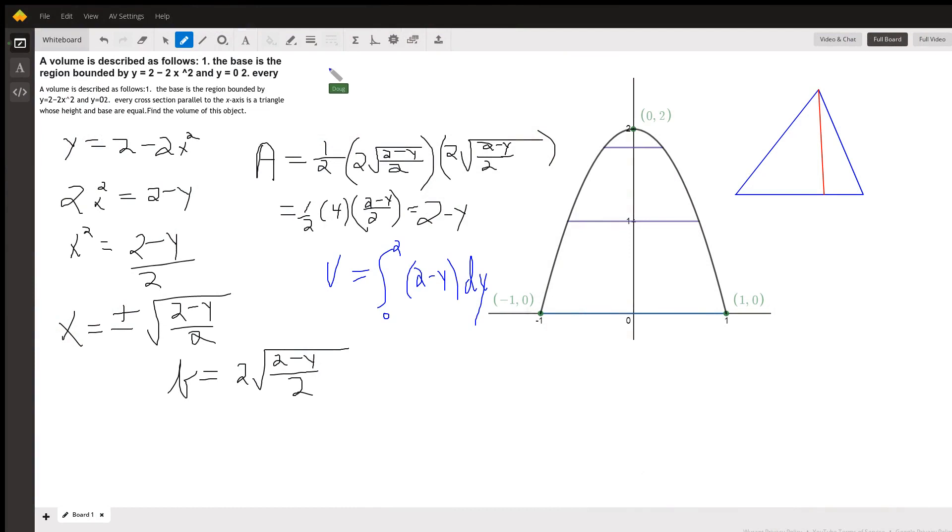I'll get you headed in the right direction on this one. Over here we have the graph of y equals 2 minus 2x squared bounded by the line y equals 0, which is the x-axis.